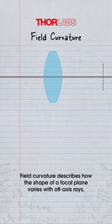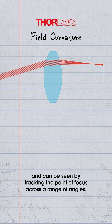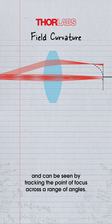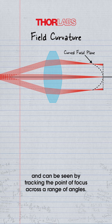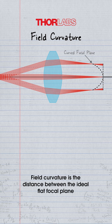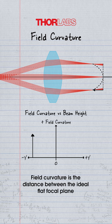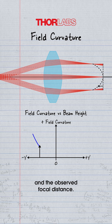Field curvature describes how the shape of a focal plane varies with off-axis rays, and can be seen by tracking the point of focus across a range of angles. Field curvature is the distance between the ideal flat focal plane and the observed focal distance.